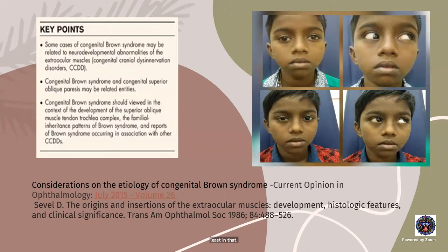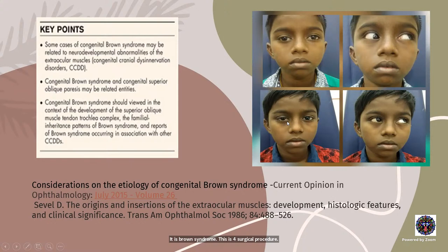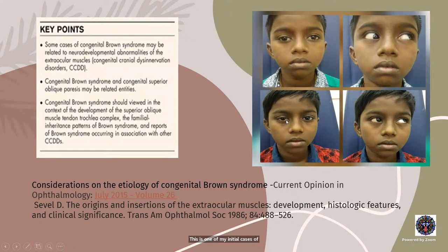Here you can see a young boy with a little hypertropia of his right eye with a small exotropia and limitation of elevation in adduction — clearly Brown syndrome. This is post-surgical. I used to do a tendon spacer using a scleral buckle, which I no longer do. This is one of my initial cases where I placed a scleral buckle as a tendon spacer between the two cut ends of the superior oblique muscle, and you can see improvement of elevation in adduction.